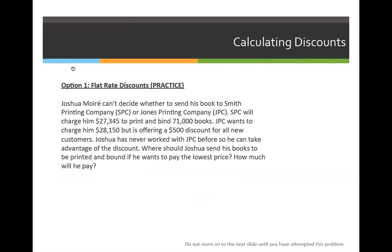Let's try another example. Try this one on your own before moving on to the next slide to see the answer. Joshua Moray can't decide whether to send his book to Smith Printing Company or Jones Printing Company. Smith Printing Company will charge him $27,345 to print and bind 71,000 books. Jones Printing Company wants to charge him $28,150 but is offering a $500 discount for all new customers. Joshua has never worked with Jones Printing Company before, so he can take advantage of that discount. Where should Joshua send his books to be printed and bound if he wants to pay the lowest price, and how much will he pay?